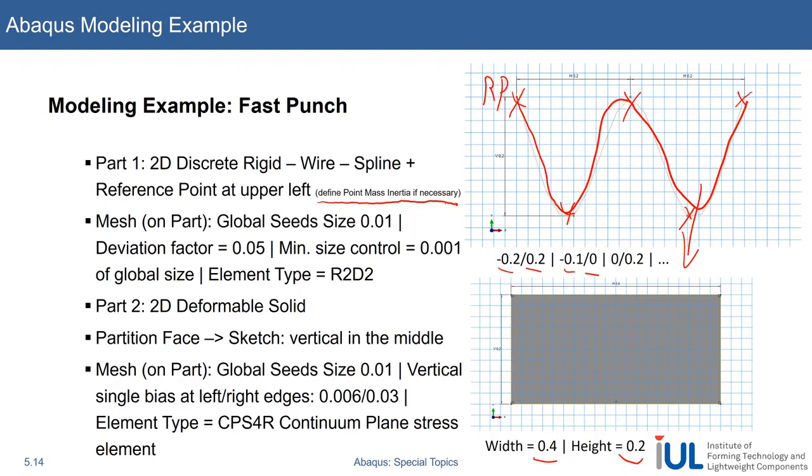But if I remember correctly, from 2017 on it automatically does this. It sets a default value of 1 to the point mass. I think if you use 2017 or higher then you don't have to do this. But yeah, let me know.